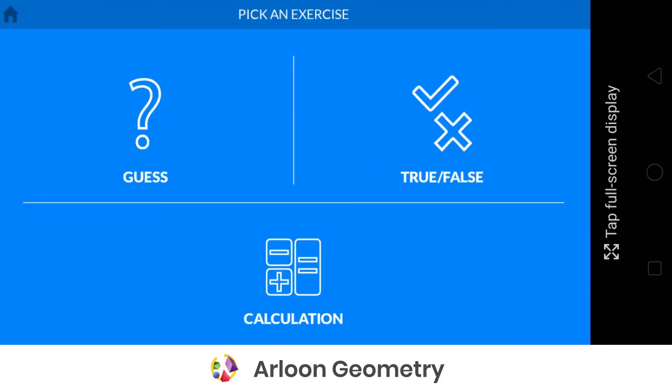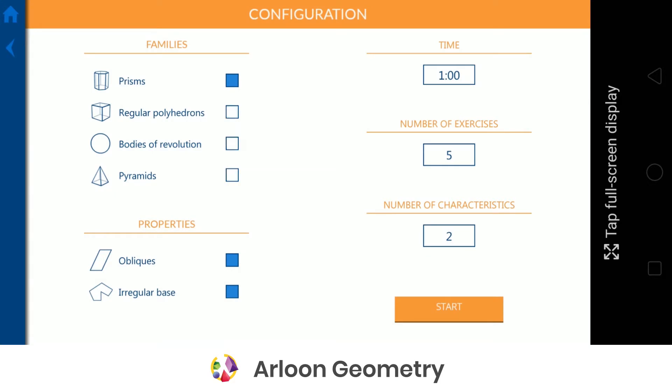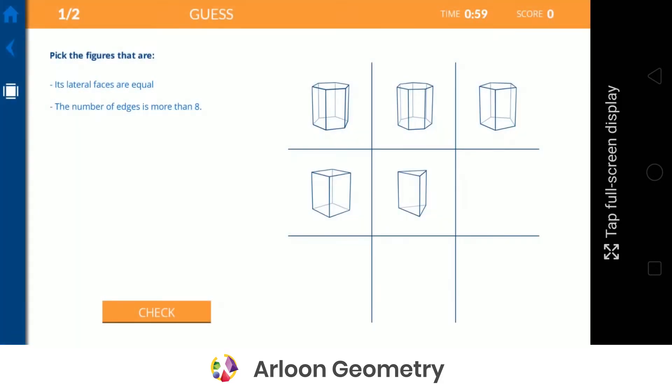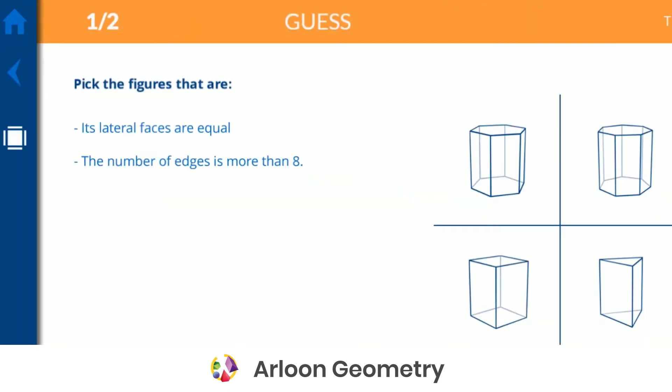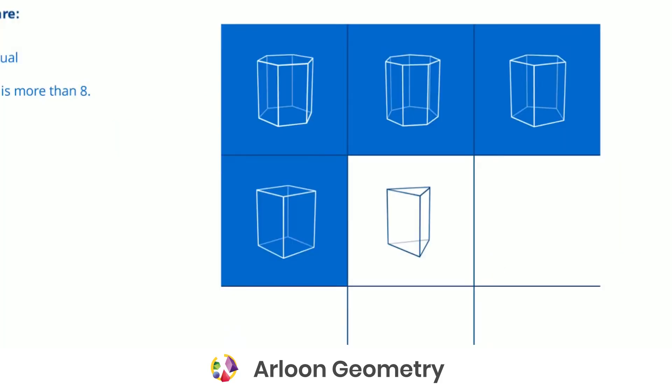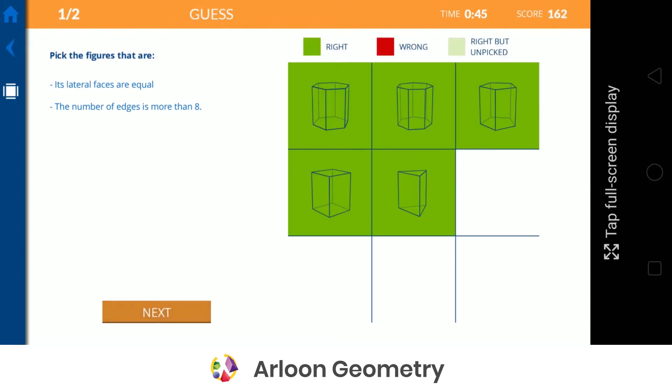Arloon geometry also has some nice exercises where they can test their knowledge. So here we're going to pick what shapes we're interested in, how many exercises we want and how many characteristics per shape we're interested, and what they have to do is select all the shapes that fit the given characteristics. So pick shapes where the lateral faces are equal and where the number of edges is more than eight. So in this case it turns out all of them. So we pick them all and we test our knowledge.